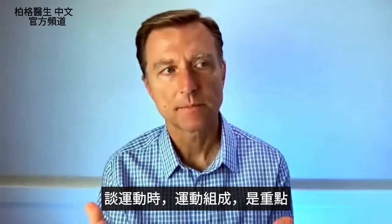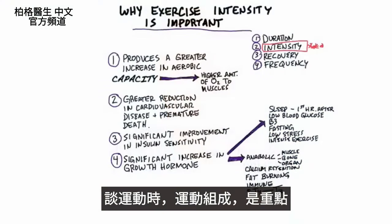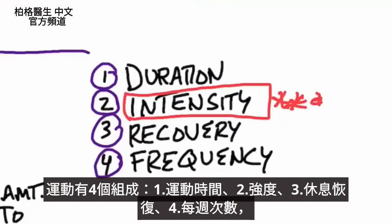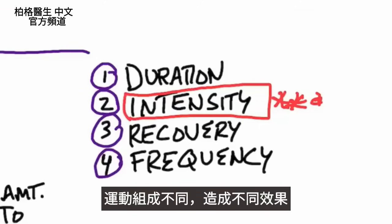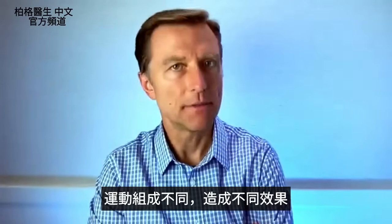When we talk about exercise, we have to talk about the different parts of exercise — the anatomy of exercise. It's really simply composed of the duration, the intensity, the recovery, and the frequency — how many times you do the duration and intensity in a given workout. You can also talk about the frequency per week. There are different variables to exercise that create different effects.